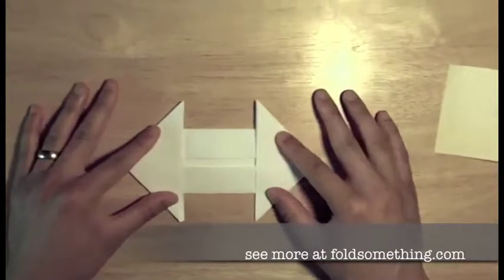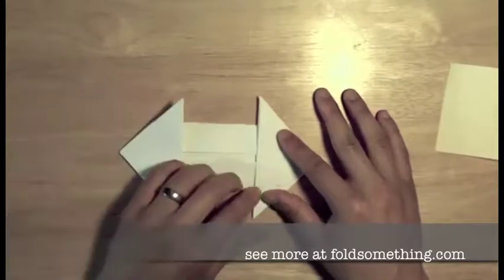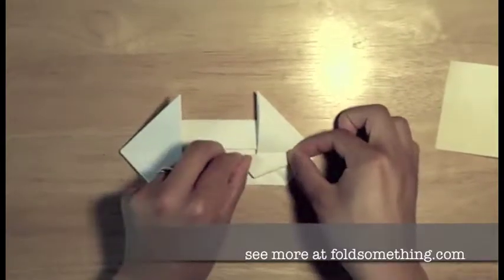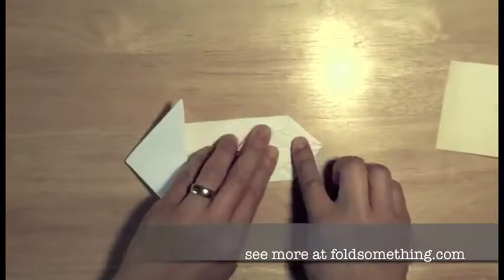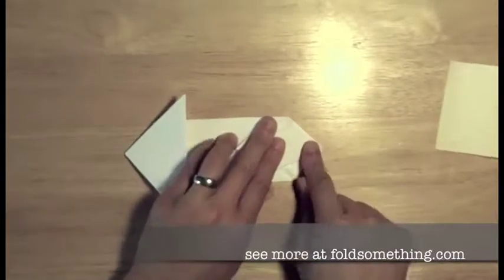I have two options: make a spaceship or make a tank. We'll start with the spaceship. Take the corner of this flap here and fold it in towards the middle. And we'll do the same with this other corner here. This is going to be the cockpit of our spaceship.